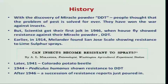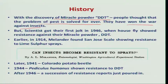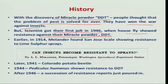If you trace the history of insecticide resistance in insects, it goes as far back as 1914. Many people thought with the discovery of the miracle powder DDT that the problem of pests was solved once and forever — they thought they had won the war against insects. But that statement did not remain valid for long. Scientists got the first jolt during 1946 itself when the housefly showed resistance to this miracle powder DDT.